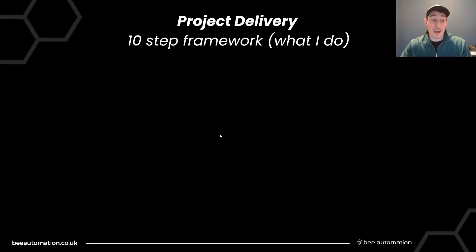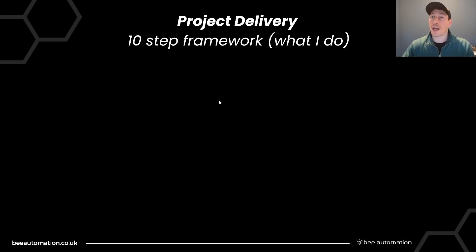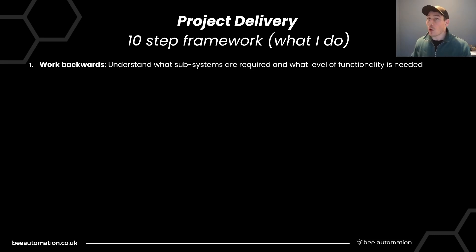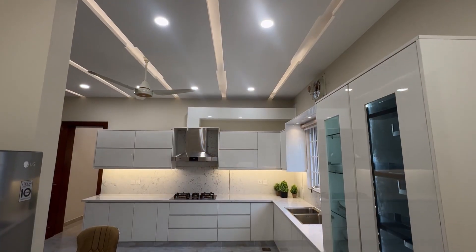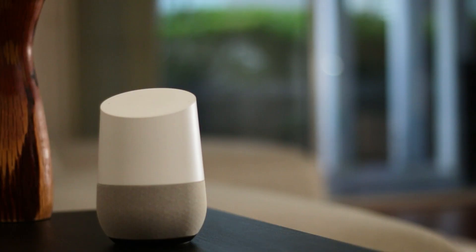This is how to deliver a smart home installation — my 10-step project delivery framework on a real-world project. The first step is to work backwards: understand what subsystems need controlling and what level of functionality you want from those subsystems. When I say subsystems, I mean lighting, heating, security, ventilation, access, and audio.